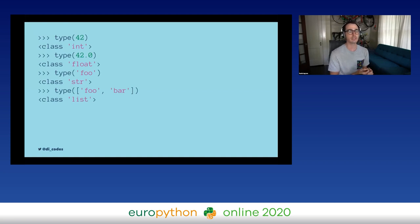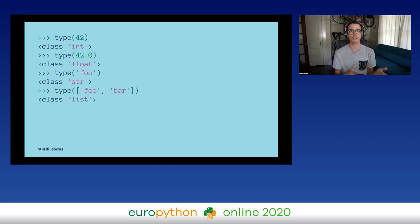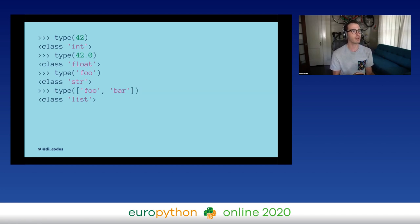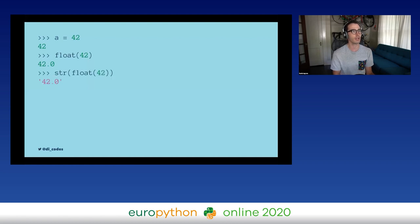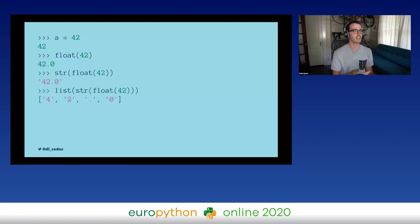I recognize these as built-ins — they tell me what types things are. But I can also use them to change types, or do what we call type casting. I could take a variable `a`, and when I assign it a value, we say `a` is of type integer. I could cast it using the `float` built-in to turn it into a float, or the `str` built-in to turn it into a string, or `list` to turn it into a really ugly list.